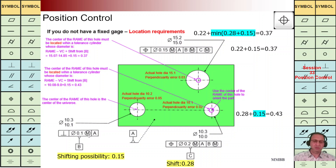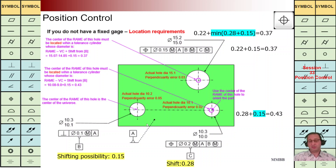Here we can see it should be perpendicular to reference A. For the shifting, TZ is 0.28. But we have datum B with a modifier. We have already calculated what is the possible shifting value for the first hole — for datum axis B it is 0.15. So we can say the shifting value for the center of this hole can be 0.28 plus 0.15.